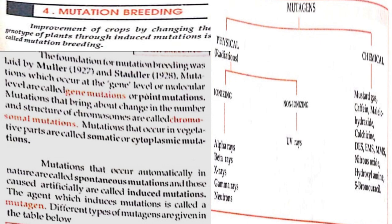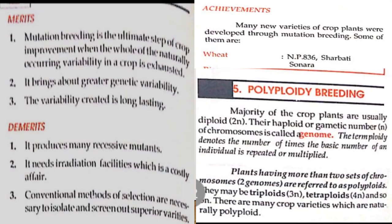The agent which induces mutation is called a mutagen. Different types of mutagens are given in the table. There are two types: physical and chemical. Physical mutagens are radiations — either ionizing or non-ionizing. Ionizing radiation has five types: alpha rays, beta rays, X-rays, gamma rays, and neutrons, whereas non-ionizing radiation is UV rays. Chemical mutagens include mustard gas, caffeine, maleic hydrazide, DES, EMS, MMS, nitrous oxide, hydroxylamine, and 5-bromouracil.